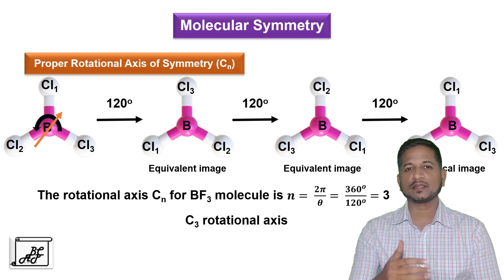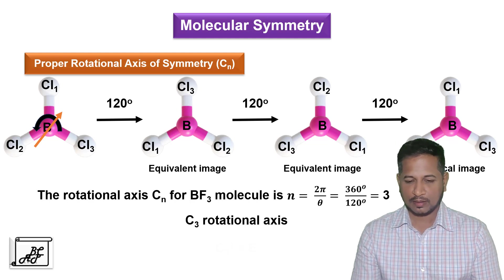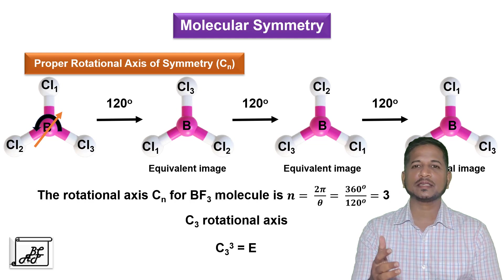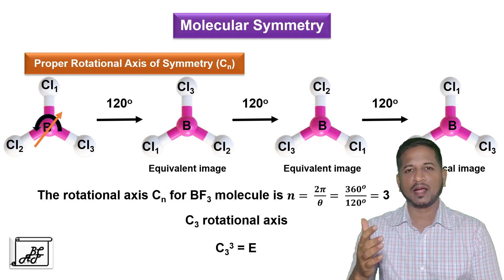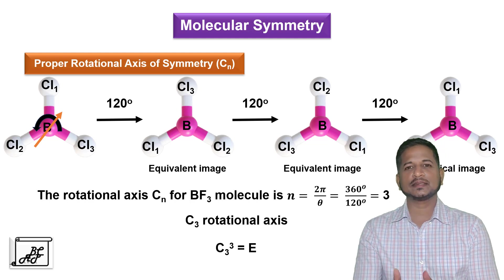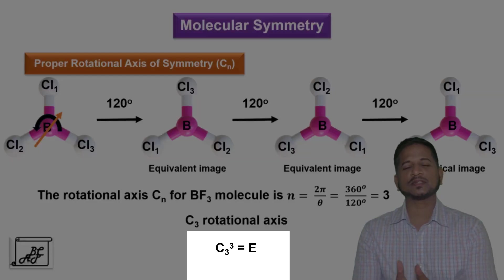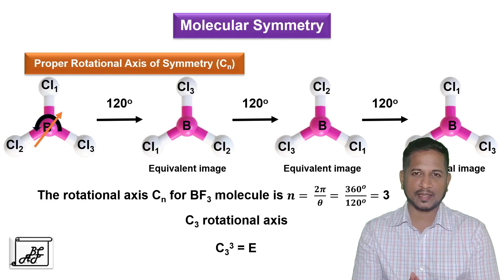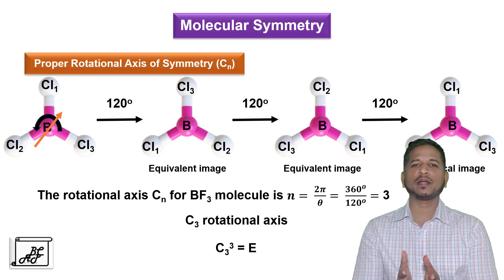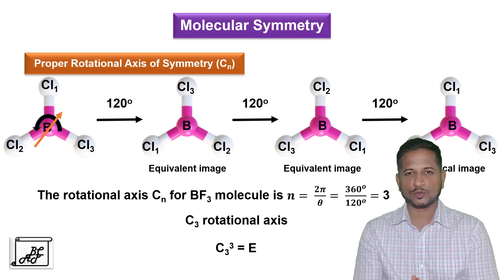After three rotations we are getting an identical image. Therefore, C3 raised to the power 3 is equal to E. E stands for the identity element. This is the relation between the proper rotational axis of symmetry and the identity element, and we have to remember this when writing character tables in future.